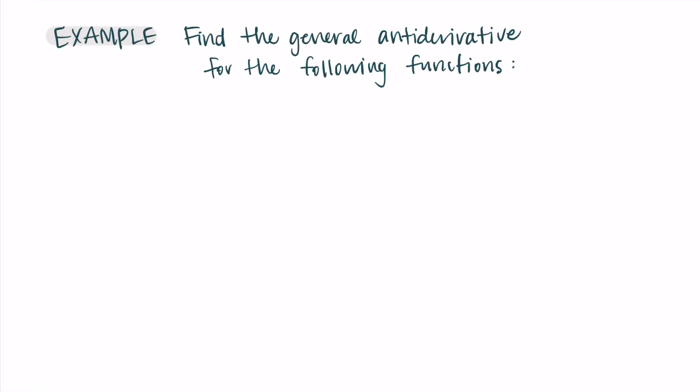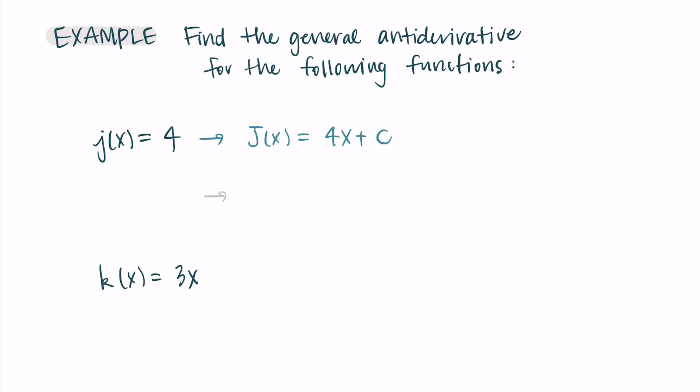Let's run through some examples. Find the general antiderivative for j of x equals 4 and k of x equals 3x. For j of x equals 4, the antiderivative is big J of x equals 4x plus c. Lines have a constant derivative, so when you see a constant function like 4, its antiderivative must be a linear function. The derivative of that line is just the slope, which is 4. We can check: the derivative of big J is 4, which is what we started with.